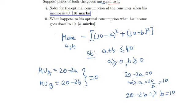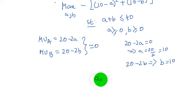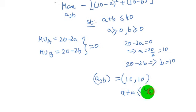Therefore we have the values of A and B as A comma B is equal to 10 comma 10. Since this bundle also satisfies our budget constraint, this is the equilibrium bundle as A plus B is less than equal to 40.